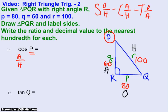So adjacent over hypotenuse is going to be 60 over 100. Now, you certainly could reduce that to 6 over 10, or you could reduce that to 3 over 5.